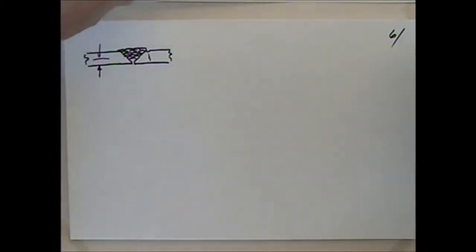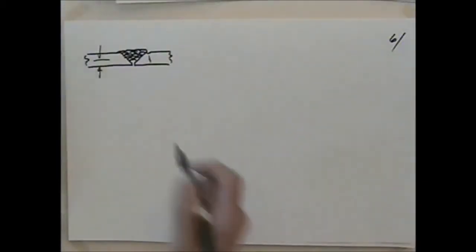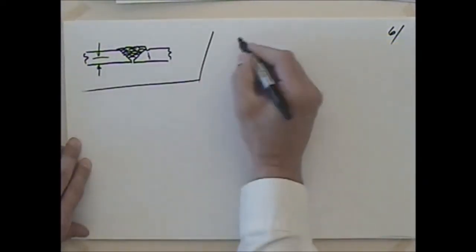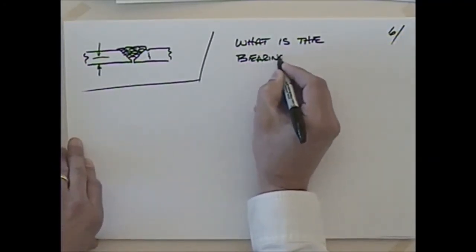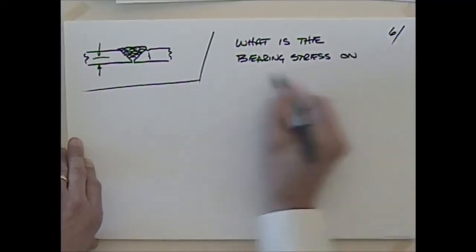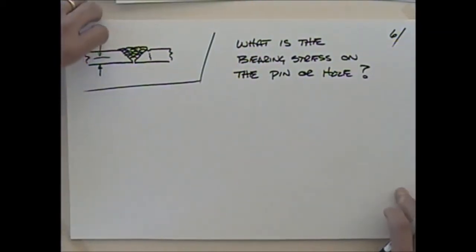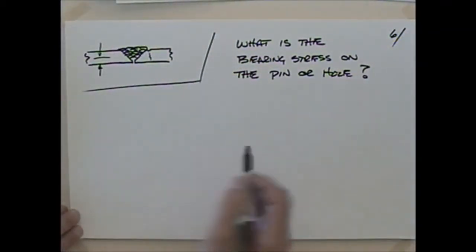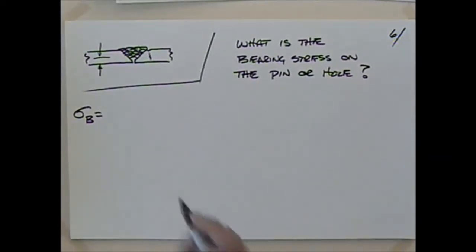We might also ask: what is the bearing stress? We could say sigma sub b — sometimes what we call bearing — and guess what it is? Force divided by area. Force divided by area. So bearing stress is pretty simple.